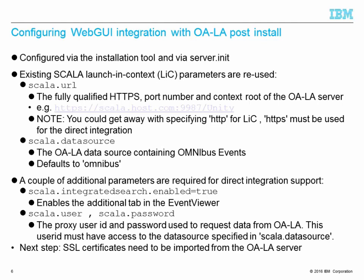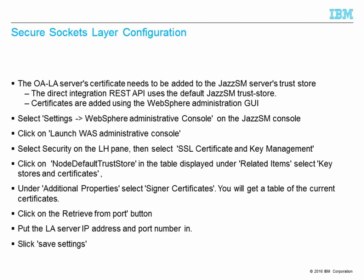When the server.init file has been set up, the next step is to import the SSL certificates from the LA server. The LA server certificate needs to be added to the JazzSM trust store. The direct integration REST API uses the default JazzSM trust store. Certificates can be added using the WebSphere administration console. To do this, select Settings > WebSphere Administrative Console on the JazzSM console and click Launch WebSphere Administrative Console. Select Security on the left-hand pane, then SSL Certificate and Key Management. Click on node default trust store, then select key store and certificates. Under additional properties, select signer certificates — you'll get a table of current certificates — then click Retrieve from Port, put in the LA server's IP address and port number, and click Save Settings.